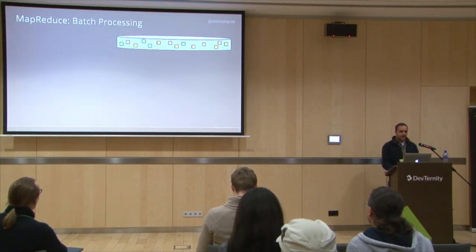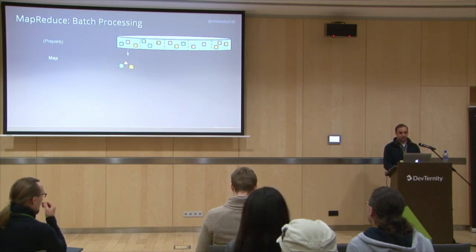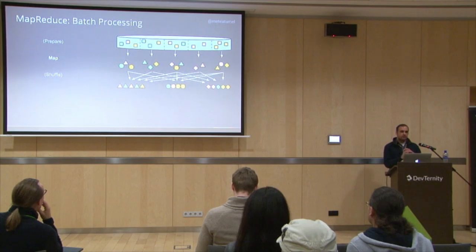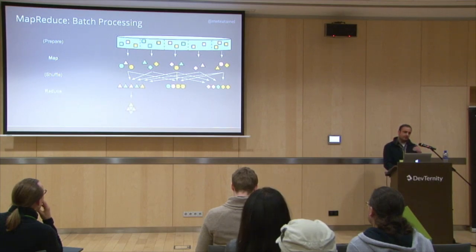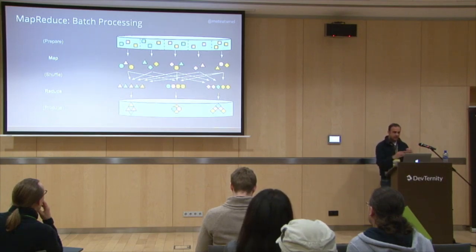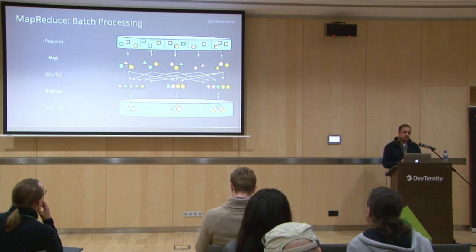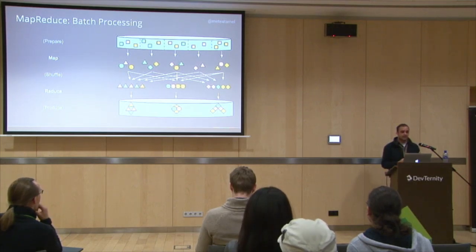I'm sure most of you know what MapReduce is, but just to recap: in MapReduce, you have lots of data you want to process. First you break your data into smaller chunks, then you apply a mapping function — some kind of transformation. Then you shuffle similar elements onto different machines, and then from the shuffle phase you apply a reduce function. Similar elements get reduced, and in the end you have your result. Map, shuffle, reduce. It's very easy to understand and applies to a lot of different problems.